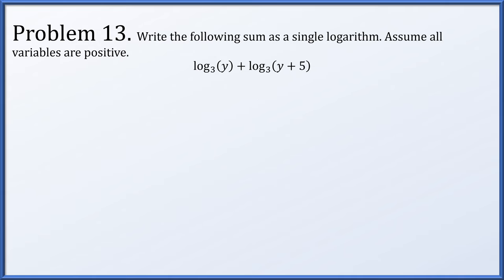In problem 13, write the following sum as a single logarithm (all variables positive): log base 3 of y plus log base 3 of (y plus 5). Since we have two logarithms of the same base being added, we express that as a product: log base 3 of y times (y plus 5). That's a single logarithm — we're done.